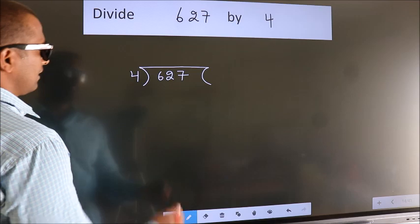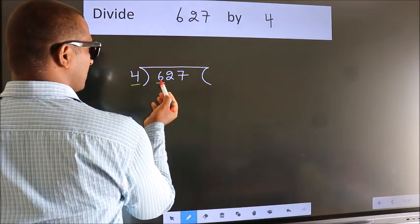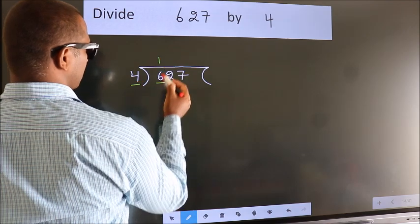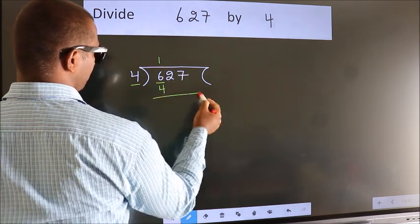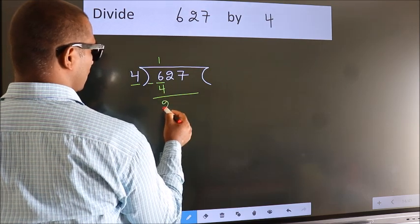Next, here we have 6, here 4. A number close to 6 in the 4 table is 4 once 4. Now we subtract and get 2.